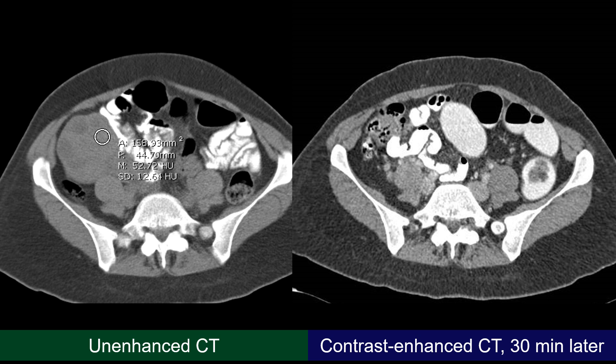With such an attenuation value of 52 HU, we need to think of iodine, iron, or calcium. Calcium is out because usually it is denser and more spotty, and we have just seen a spot of calcification within the same lesion. So the background of the lesion is rather dense, probably because of iodine or iron content.